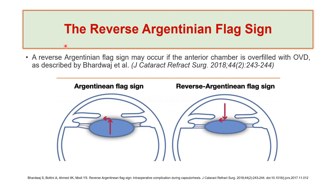However, there is another complication titled the reverse Argentinian flag sign. This happens if the anterior chamber is overfilled with OVD, as described in a paper published in the Journal of Cataract Surgery in 2018. The mechanism is reversed — the vector forces are the reverse. In the Argentinian flag sign, high intralenticular pressure compared to anterior chamber pressure pushes the fragile anterior capsule causing pararadial extension. In the reverse Argentinian flag sign, high anterior chamber pressure compared to intralenticular pressure also causes pararadial extension of the anterior lens capsule.